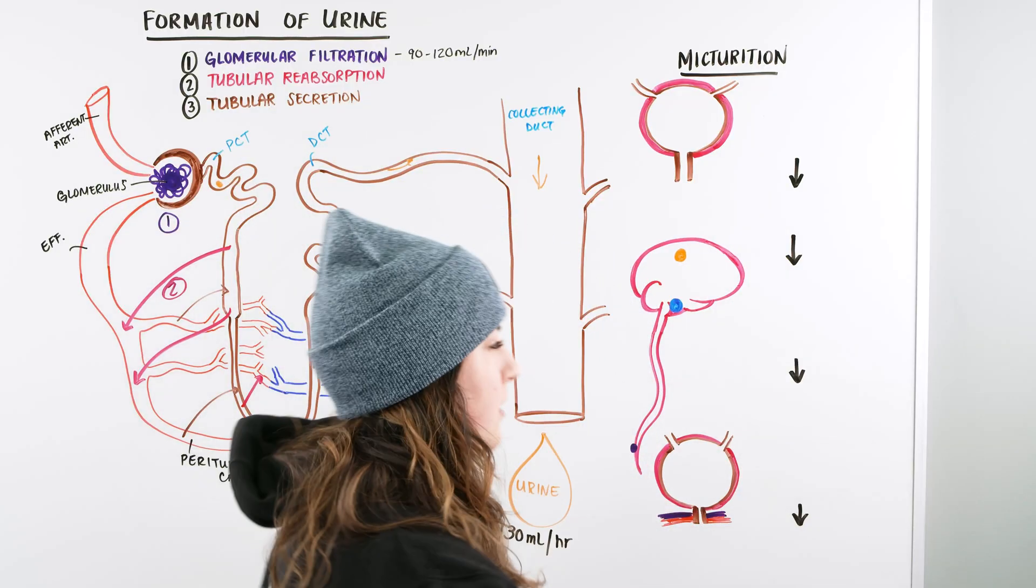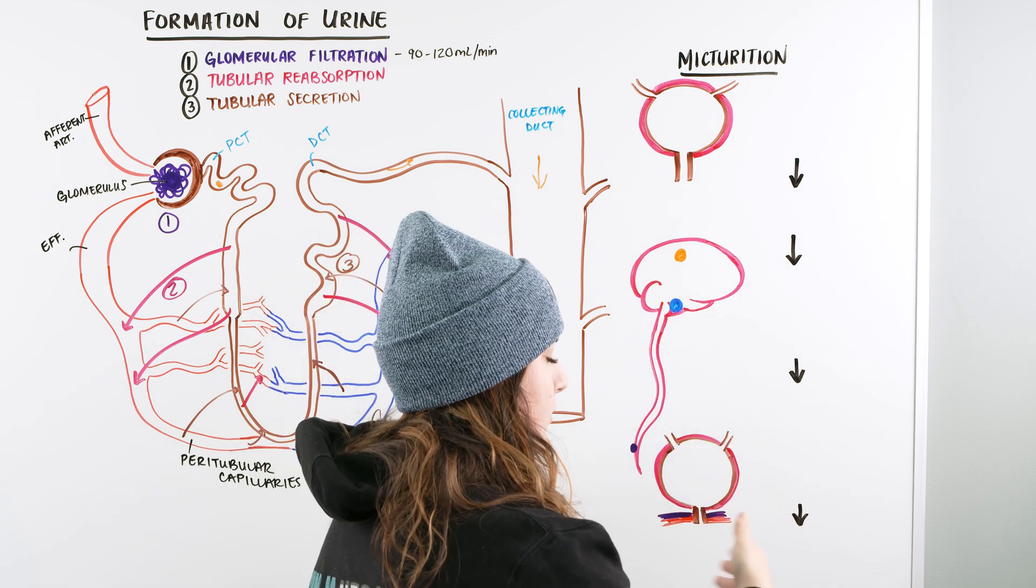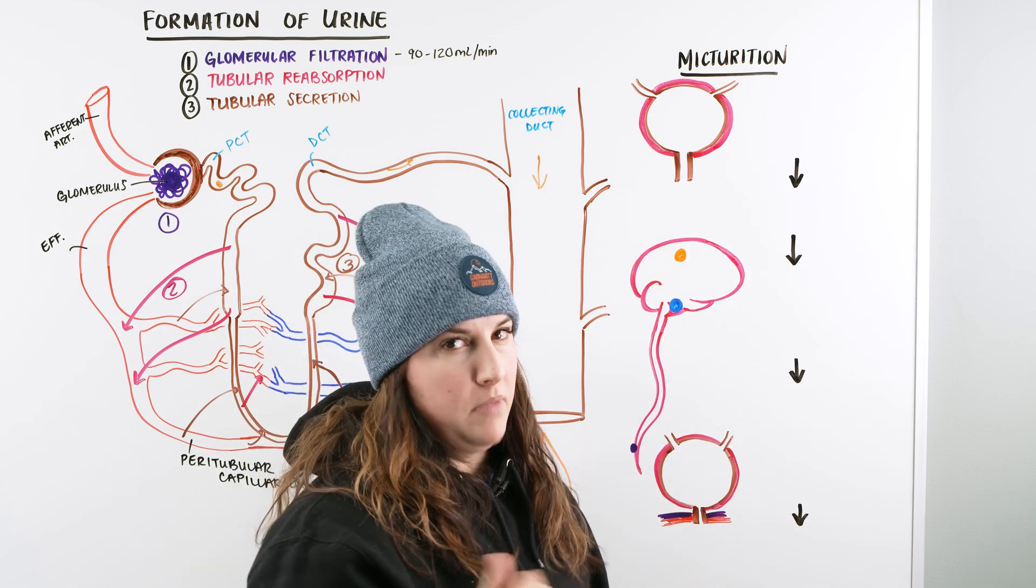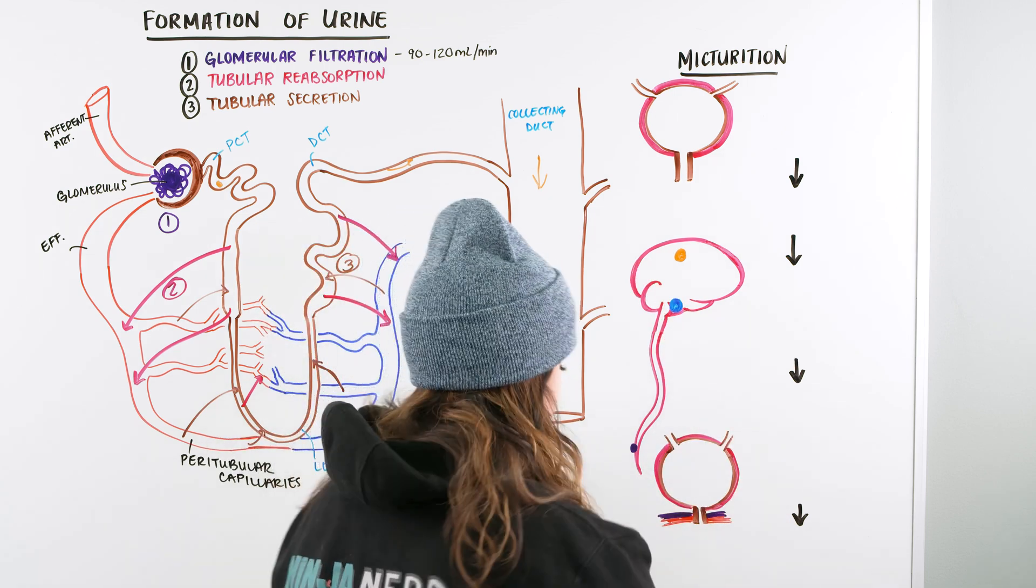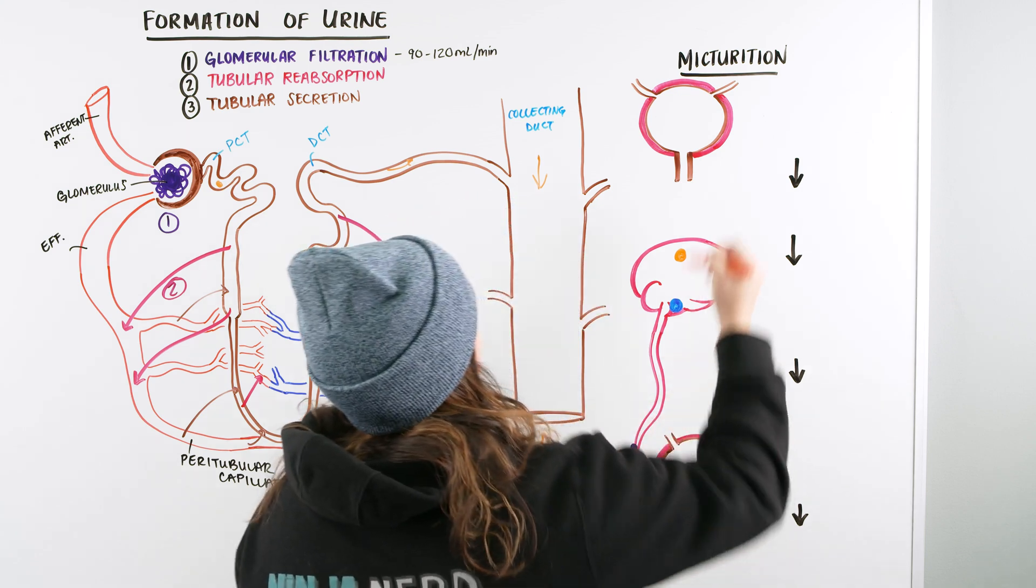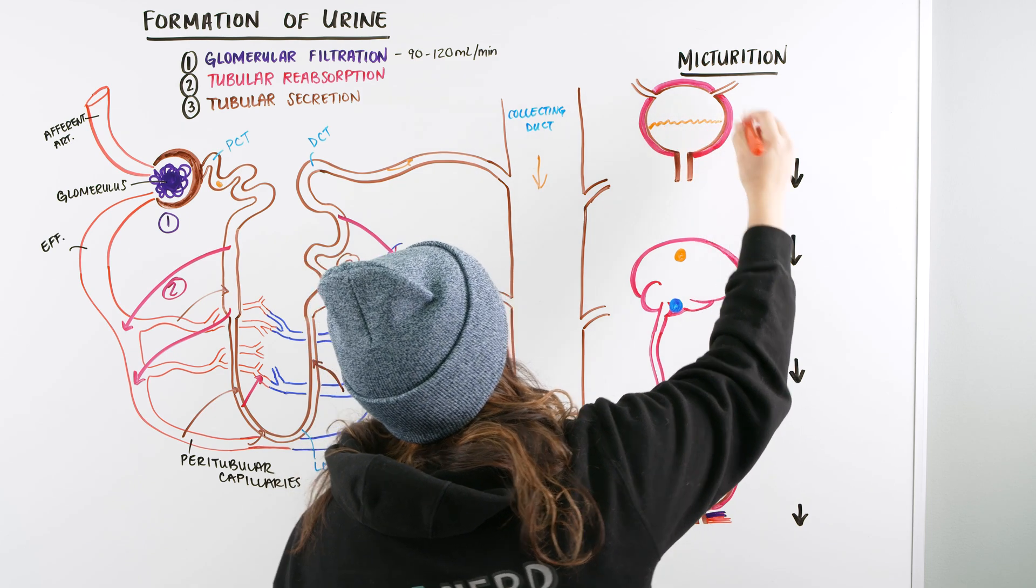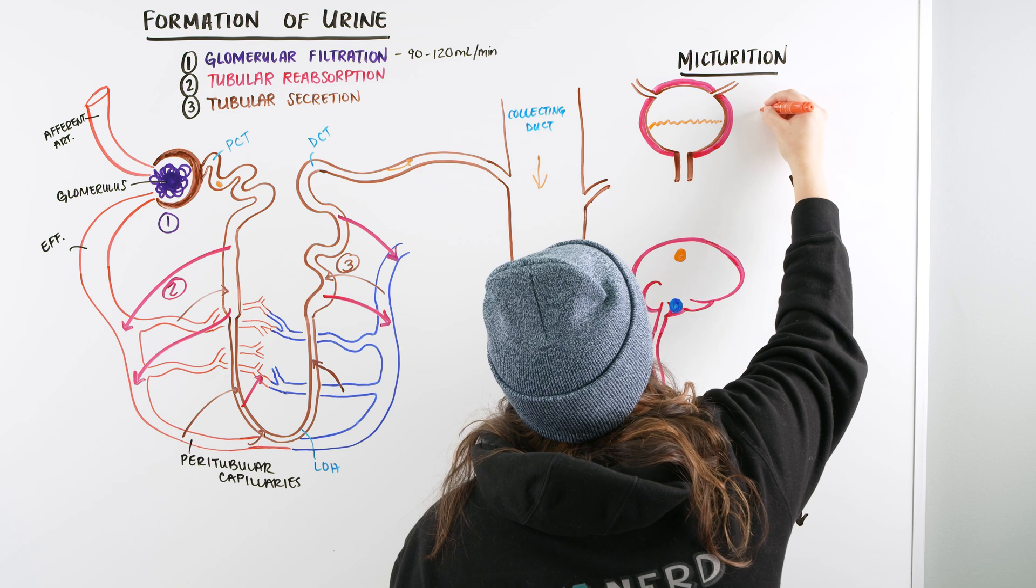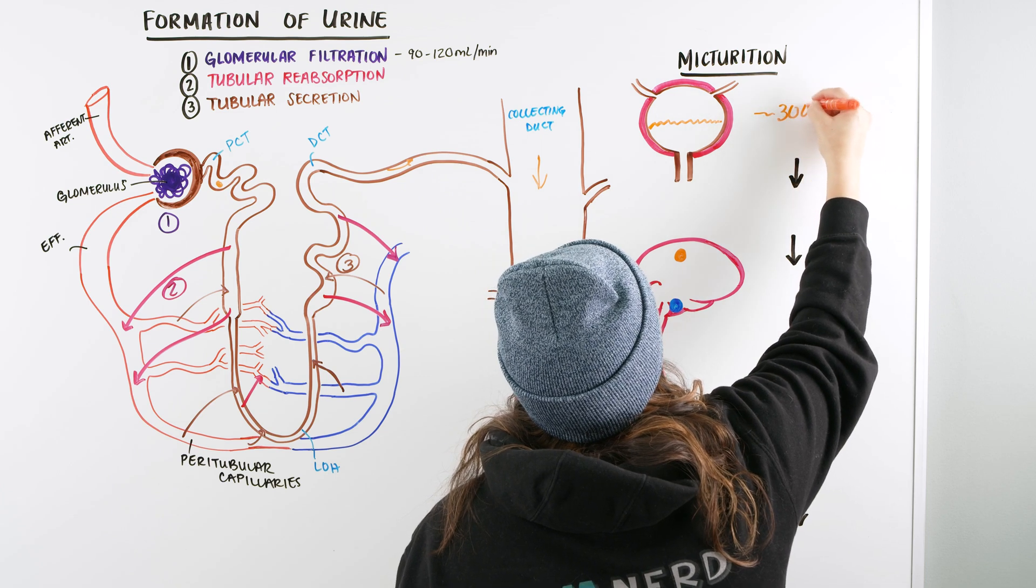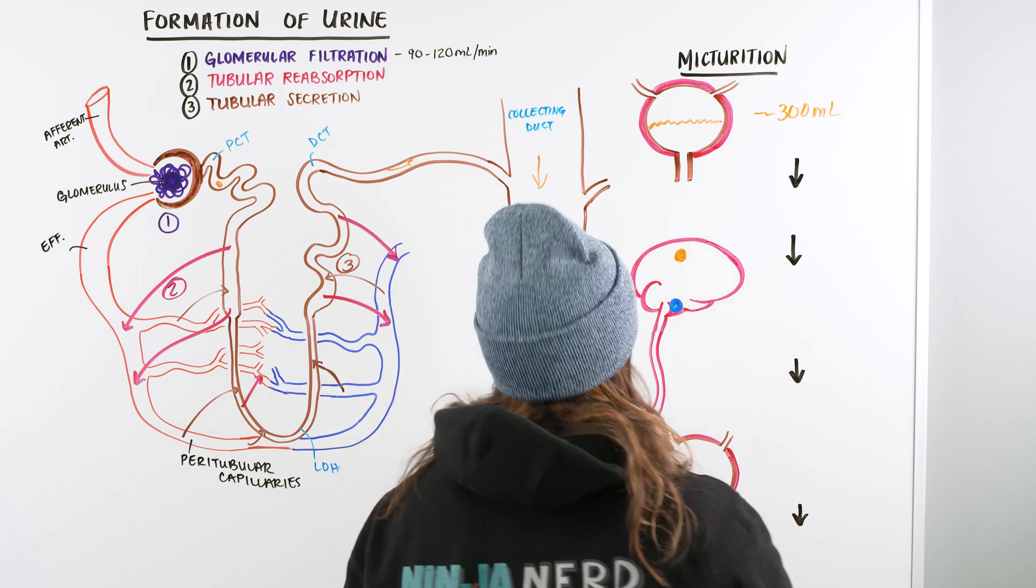All right, let's talk about now micturition. How do we get the urine that we've now created to come out of our body? And hopefully in a way that we are able to maybe control it, maybe not. Let's see why. So first we have in our bladder, we have urine that starts to accumulate. So say we're somewhere around approximately 300 milliliters in there. We're roughly around half full is what we're going to be thinking.